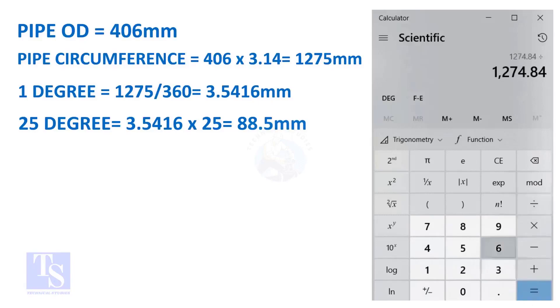And finally, multiply the 1 degree arc length by 25. Now you have the arc length of 25 degrees. You can apply this formula to get the arc length of any degree.